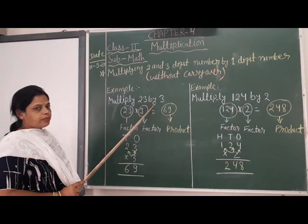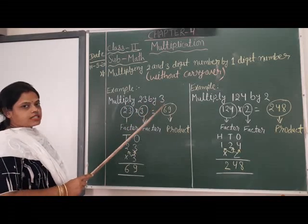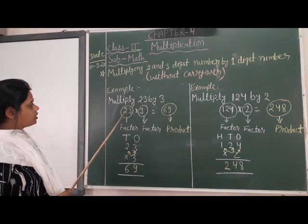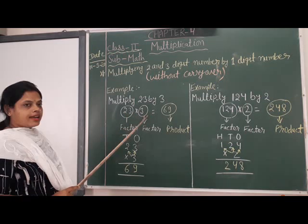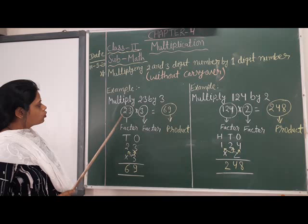Let us go through an example. Multiply 23 by 3. There are 23 and 3, these are 2 factors.